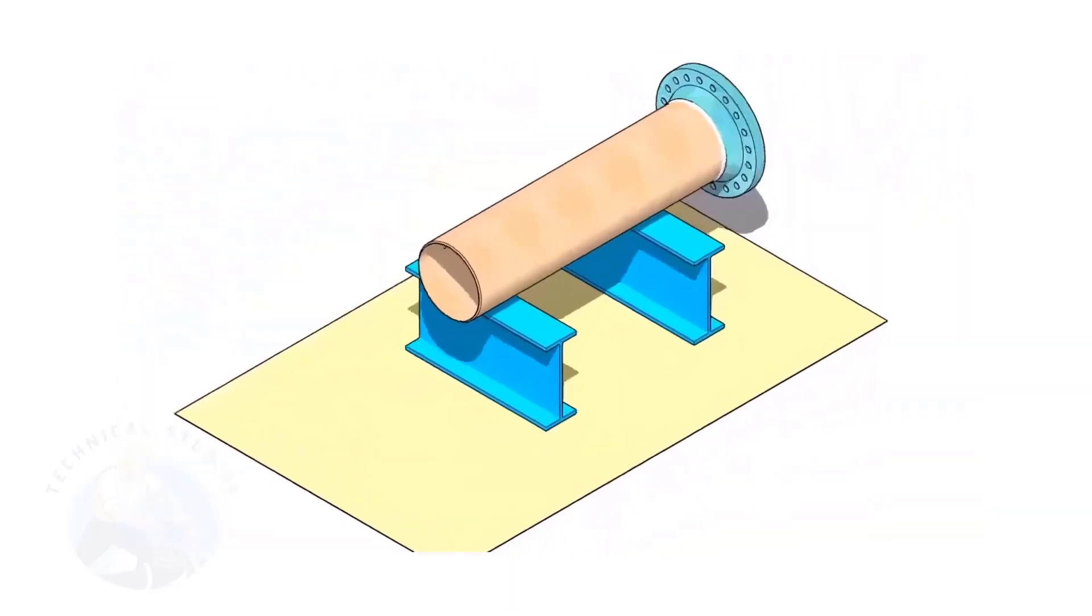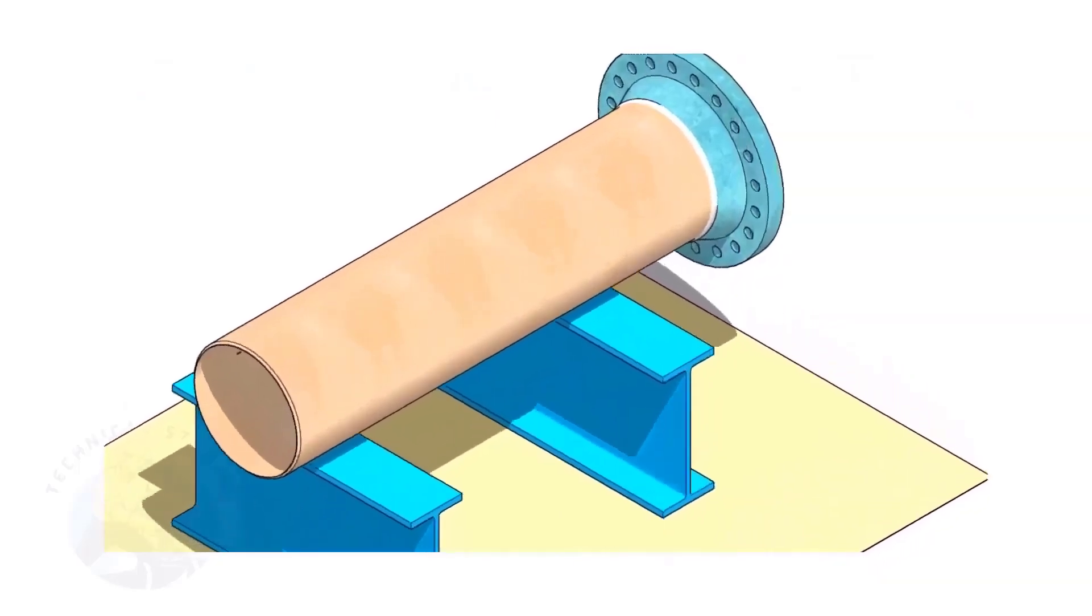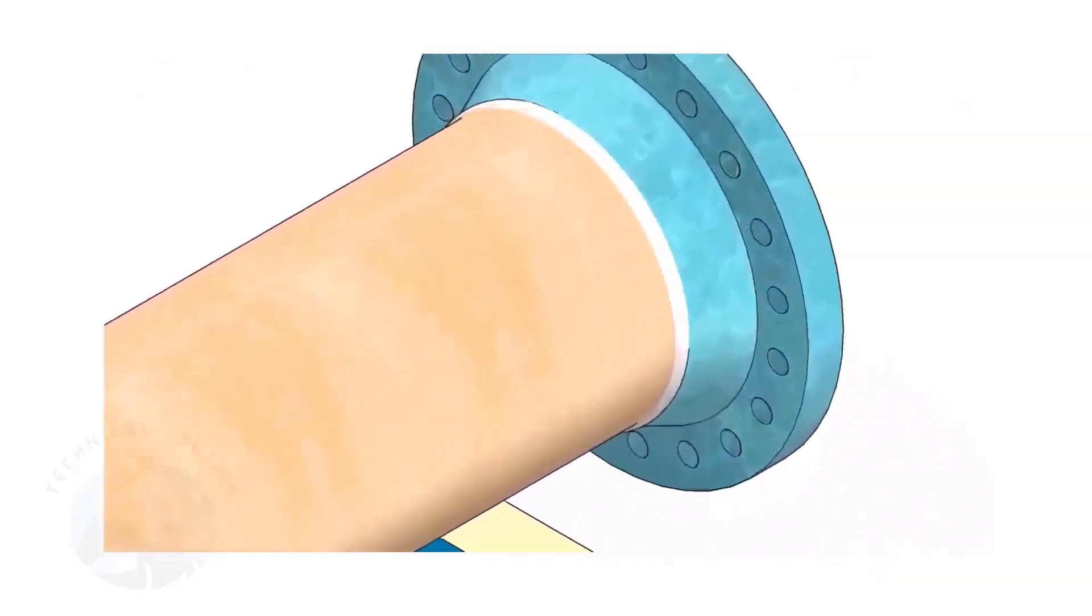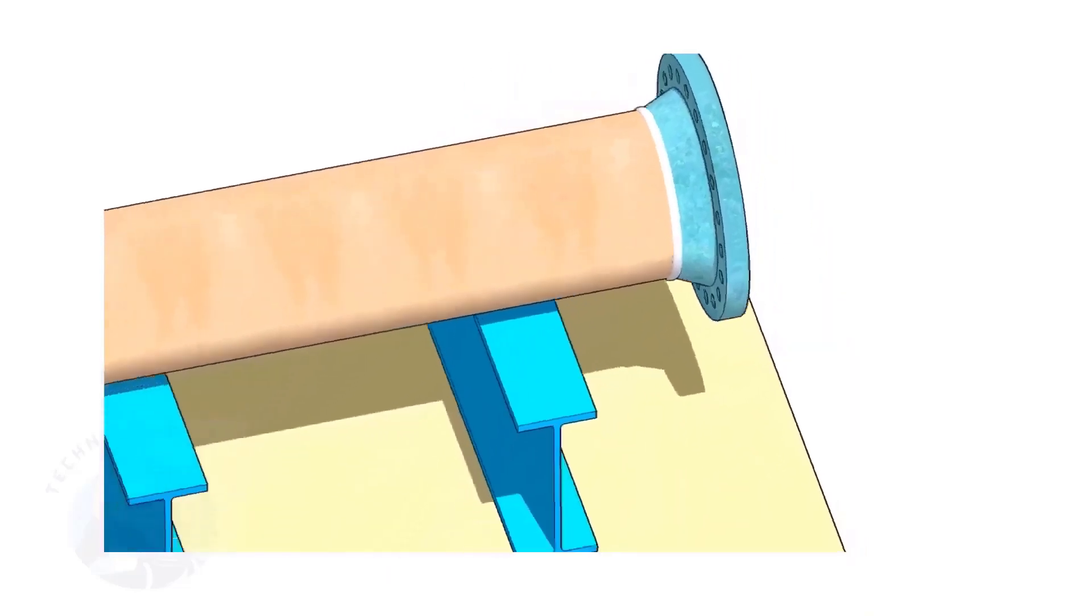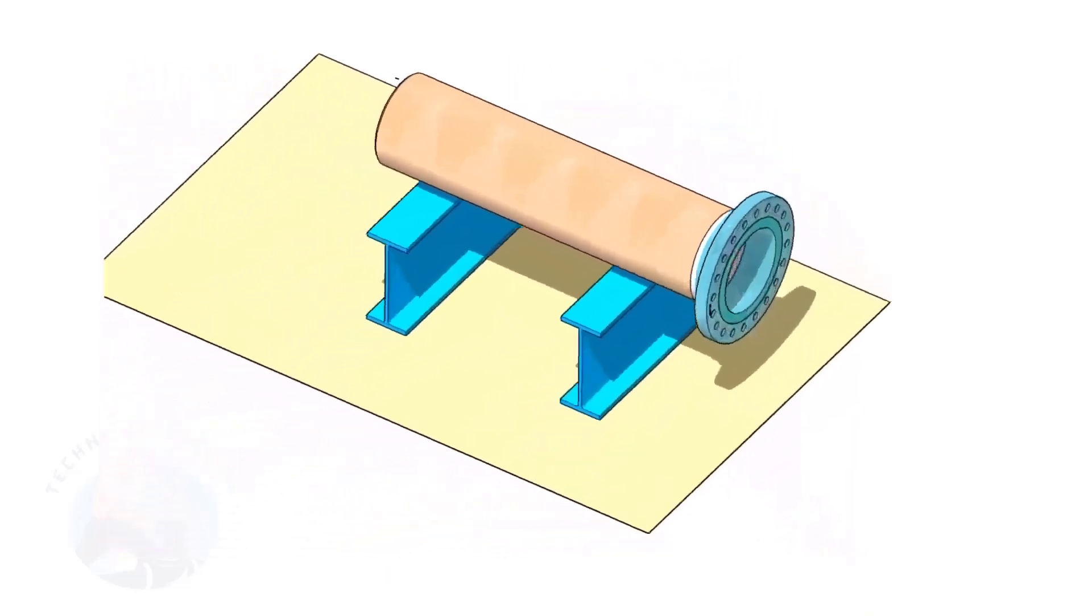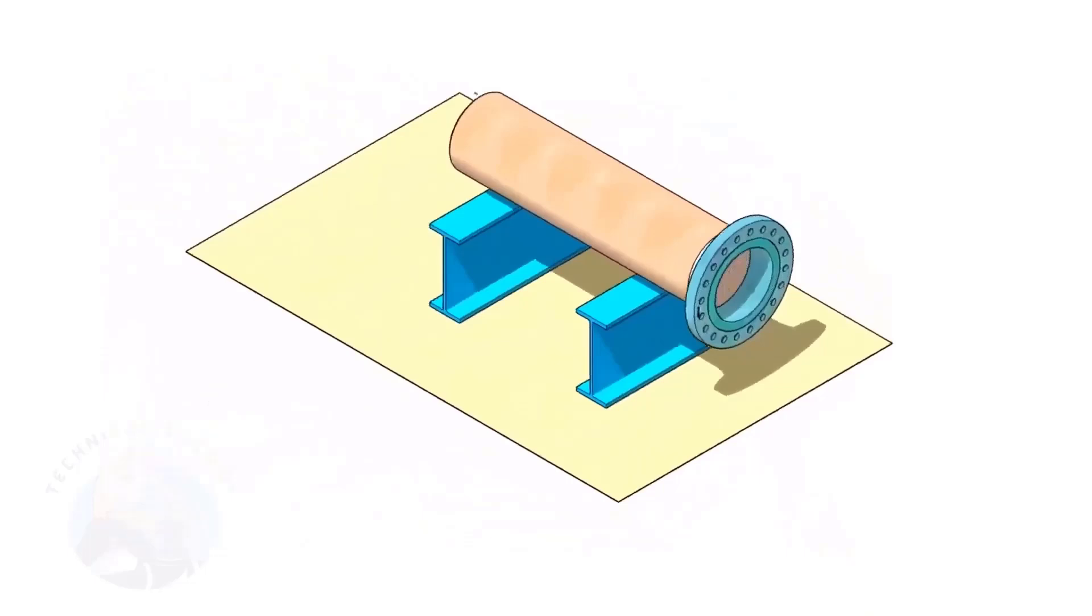Assume that the flange is welded to the pipe. Put the spool on suitable supports. Correct the plumbness of the flange.